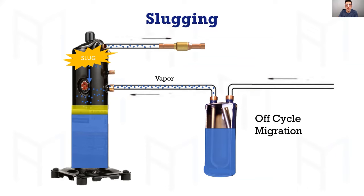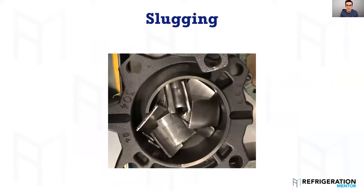A major flooded start causes slugging in scroll compressors. This is what it looks like when you cut one open. To open a scroll, you really need to seal it down to a table or pallet, wear glasses and a safety shield, and use a reciprocating saw — some people use a grinder or even plasma cutters. I've cut dozens of them open. This is a compressor that took a slug — it could be from oil or liquid refrigerant — but you need to understand what caused the failure. Until you start cutting more compressors open and looking inside them, that's when you're going to start learning more.